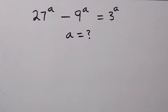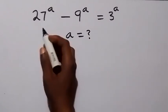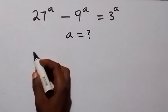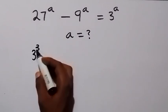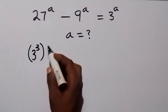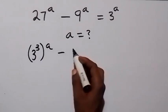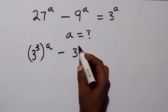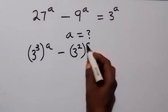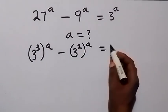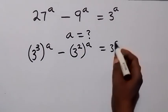Hello, you are welcome. How to solve for a in this nice exponential equation. You can derive this as 3 raised to power 3, then raised to power a, minus 3 squared then raised to power a, which equals 3 raised to power a.